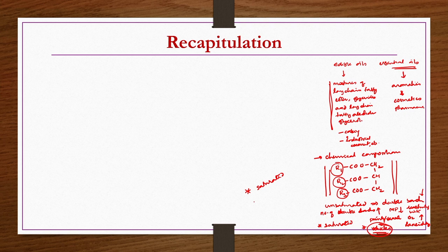Two best approaches for saturation are hydrogenation, which is a catalytic activity occurring in the presence of a catalyst with required temperature and pressure, and the use of antioxidants. This is the basic introduction of the oils and fats industry — how oils are produced and how processing or purification of crude vegetable oils is usually done in industries.